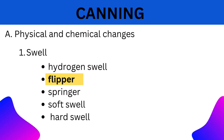2. Flipper: The can appears normal, but when struck against the tabletop, one or both ends become convex and spin or flip out, but can be pushed back to the normal condition by little pressure. Such a can is termed as a flipper and may be in the initial stage of swell or hydrogen swell. It may also be affected by overfilling, under-exhausting, or gas pressure due to spoilage.